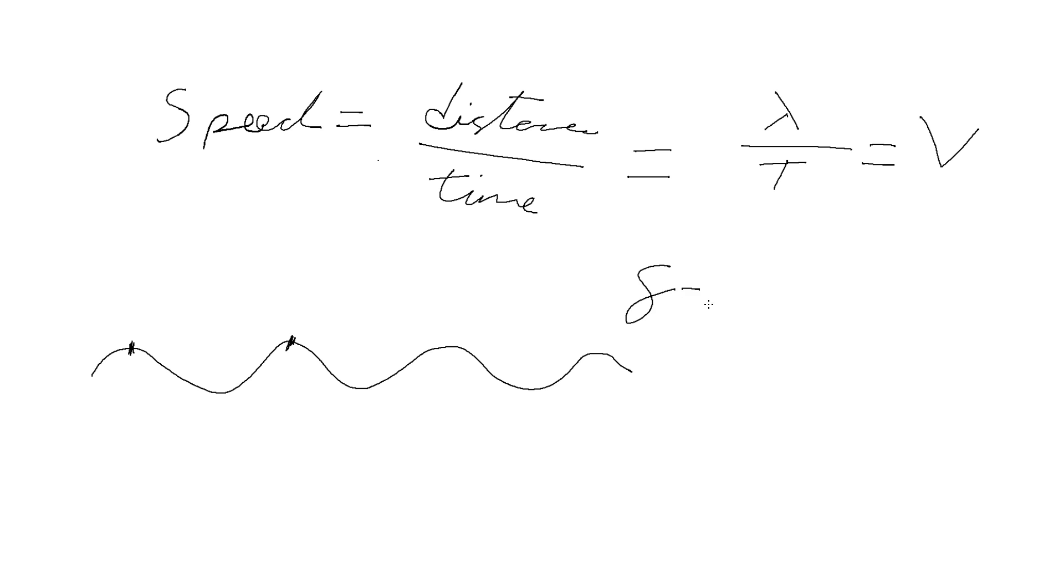But we also know that frequency is given by one over period. So this is effectively lambda times one over T, which becomes that the wave speed is equal to f lambda. So v is f lambda.